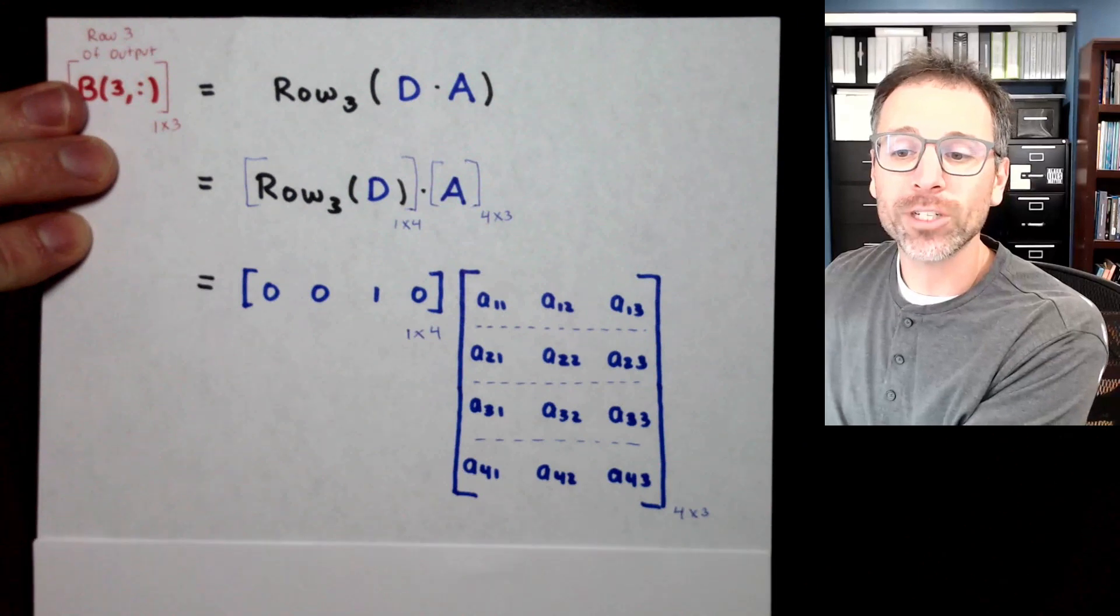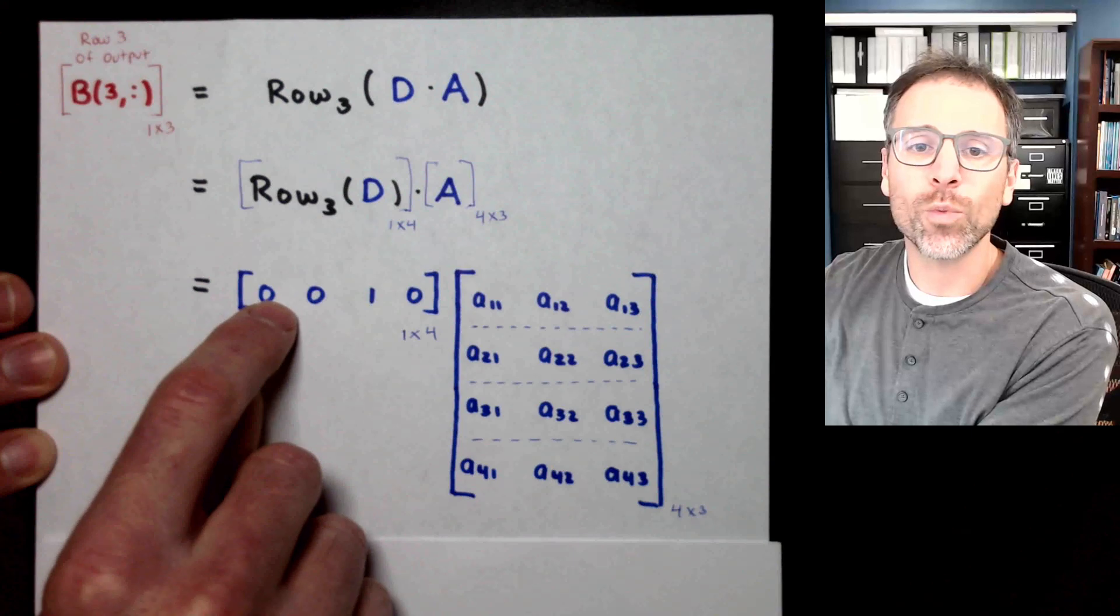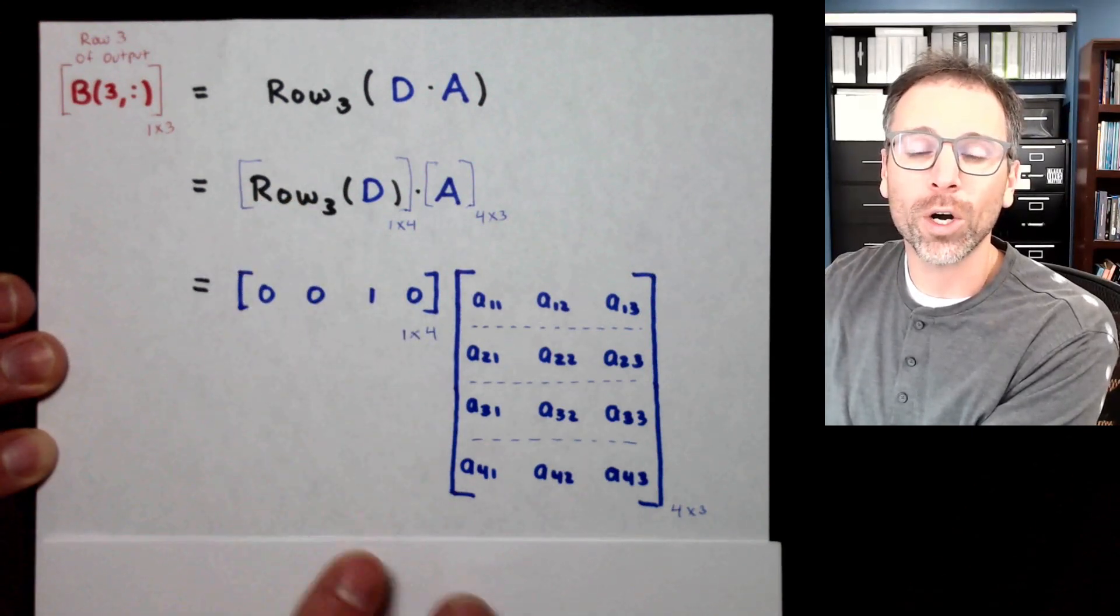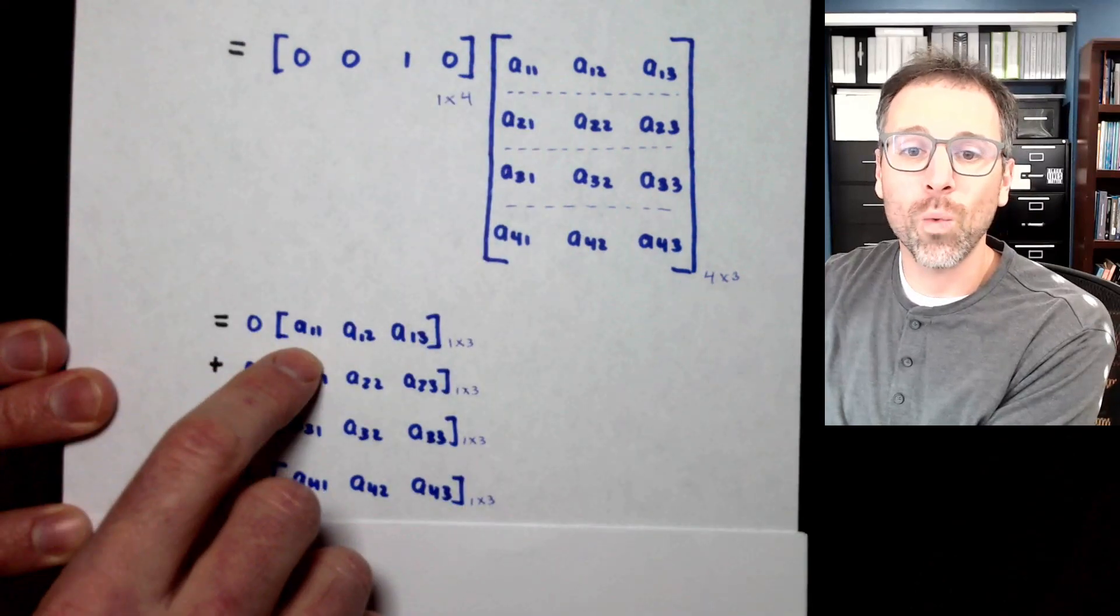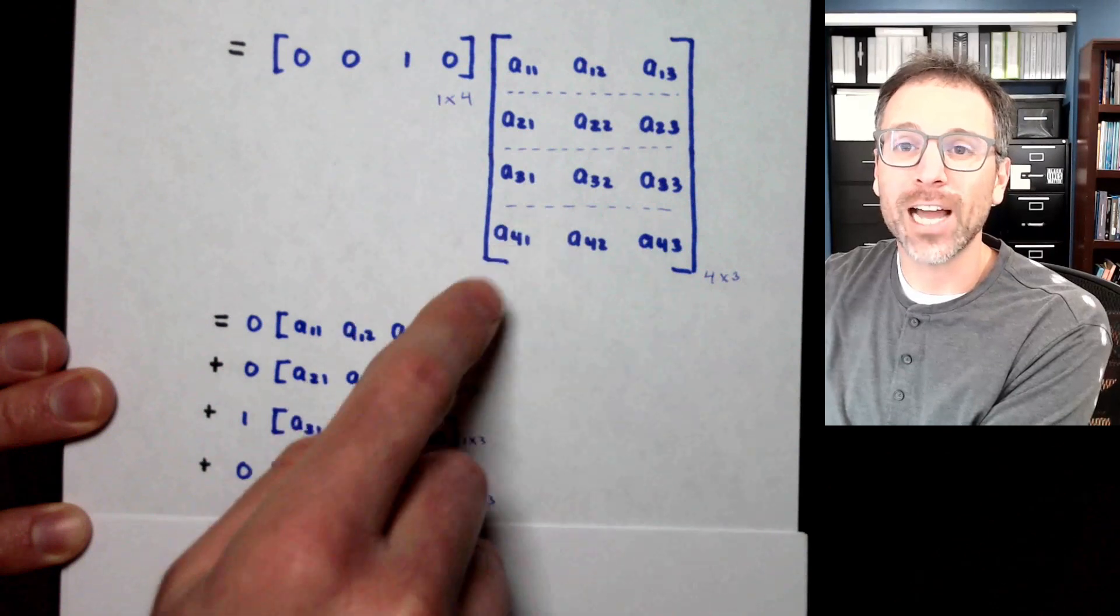We break matrix A into rows and we take linear combinations of the rows of our modeling matrix with scalar entries coming from the appropriate row of our algebraic worker. This results in zero times row one plus zero times row two plus one times row three plus zero times row four.